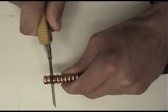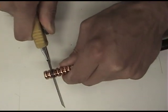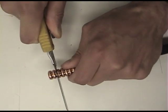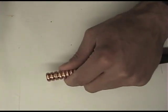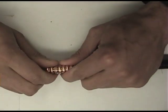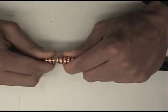Try not to nick the center conductor. And now you can pull off the front end.